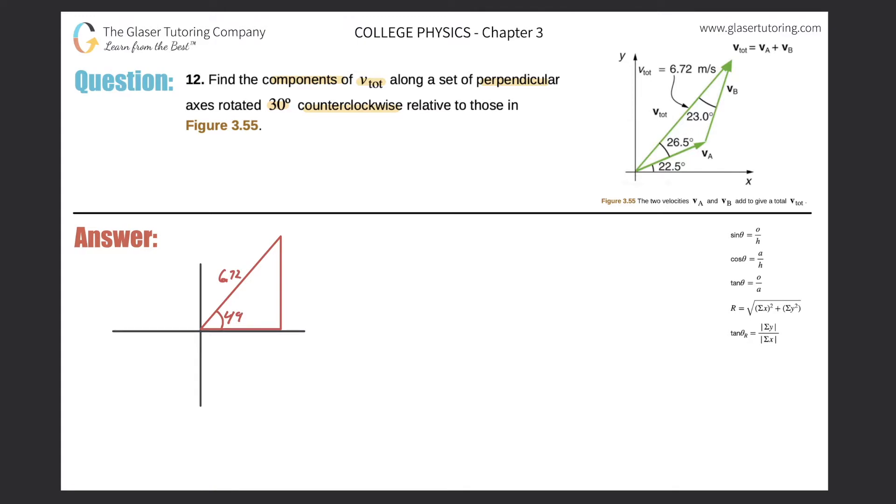So now this would be the X component, and this would be the Y. But what they want to know, they don't want to know that, they want to know that, what are the components if I were to rotate the axes 30 degrees counterclockwise? Okay, so first let's draw a new set of axes rotated approximately 30 degrees. So just bear with me, I'm going to try to do this as accurately as I can.